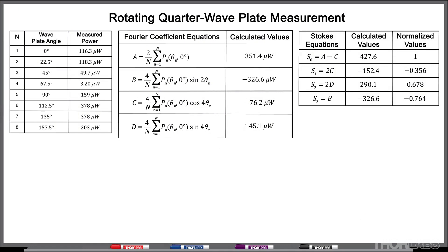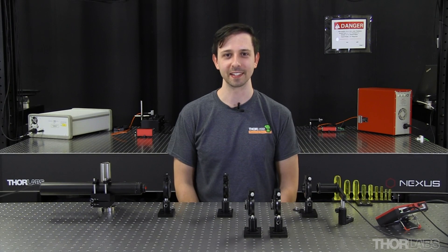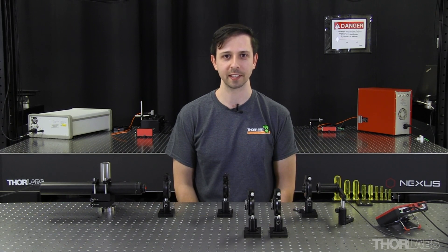Now that we've completed all the measurements, we can calculate the A, B, C, and D coefficients, and from these we can calculate the Stokes parameters, where we'll once again divide through by the value of S0 to obtain the normalized Stokes parameters. One of the advantages of the rotating quarter wave plate method is that all of the optics are in the beam path for the entire measurement, which eliminates any concerns about the total transmitted power being changed by placing an optic in or out of the beam path. In addition, you can improve the accuracy of this technique by increasing the number of measurements by reducing the steps between each measurement.